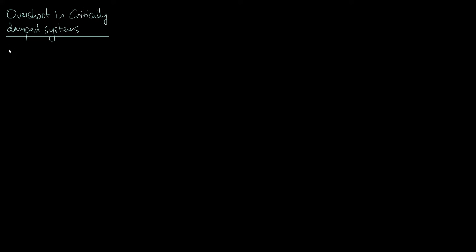To start with, let's have a very brief review of the equation of motion and the solution in the critically damped case. If we apply Newton's second law to a mass-spring system, we get mx'' + bx' + kx = 0, where m is the mass, b is the damping coefficient, and k is the spring constant. We often rewrite this as x'' + 2γx' + ω₀²x = 0, where γ = b/2m and ω₀² = k/m.